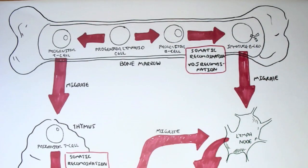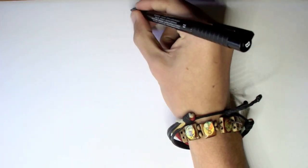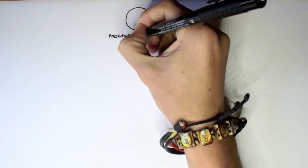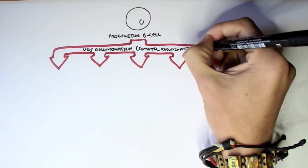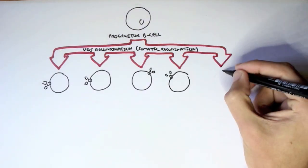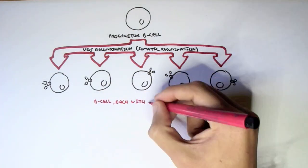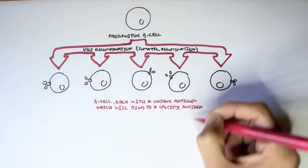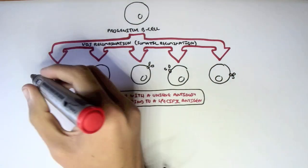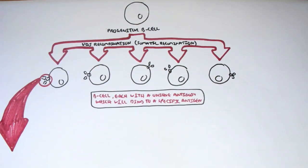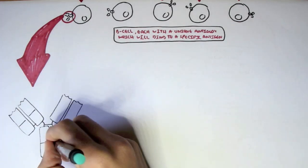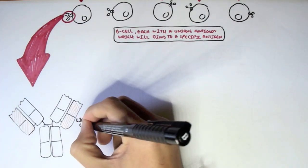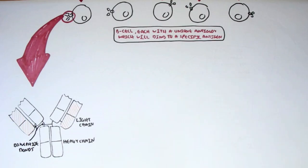Now let's go back to the progenitor B-cell and learn more about the diversity of antibodies. The progenitor B-cell through VDJ recombination becomes immature B-cells, each with a unique antibody that will bind to a specific type of antigen. Let's look at the antibody structure to appreciate this diversity. An antibody consists of a light chain — shown in orange — and a heavy chain, connected through disulfide bonds.